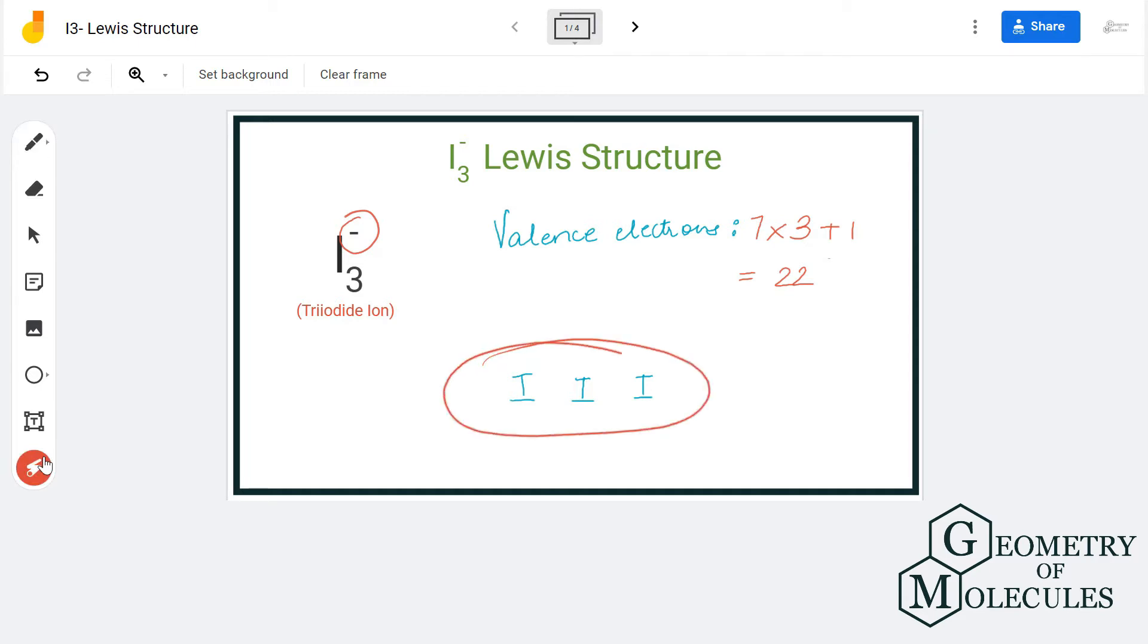be arranged in a linear pattern because the electronegativities of all these atoms are similar. Arrange these atoms and place a pair of valence electrons between two iodine atoms to show a chemical bond. So we